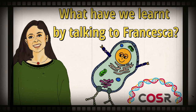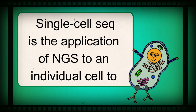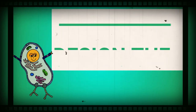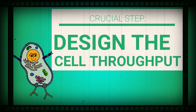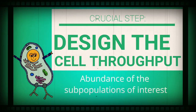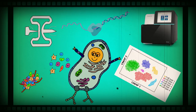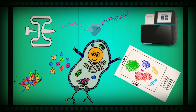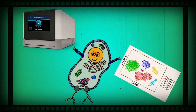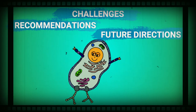Let's sum up what we learned by talking to Francesca from the Center for Omic Sciences at Ospedale San Raffaele. Single-cell sequencing is the application of next-generation sequencing techniques to an individual cell to profile its genome, epigenome, or transcriptome. The design of cell throughput is a crucial step in experiment design, depending on the heterogeneity of the sample and the abundance of subpopulations of interest. We illustrated the five steps required to perform a single-cell experiment, focusing on how the Chromium single-cell RNA-seq protocol works, and reviewed the recommendations, challenges, and future directions of this rapidly evolving technique.